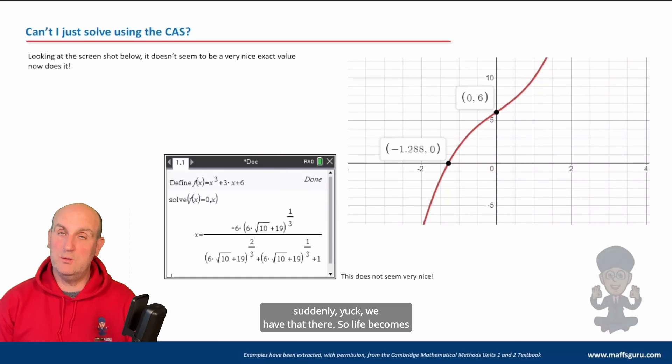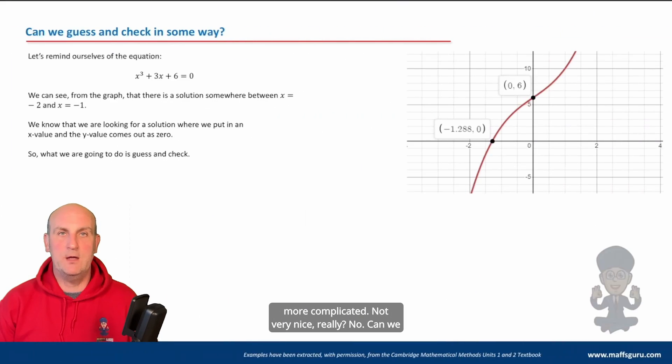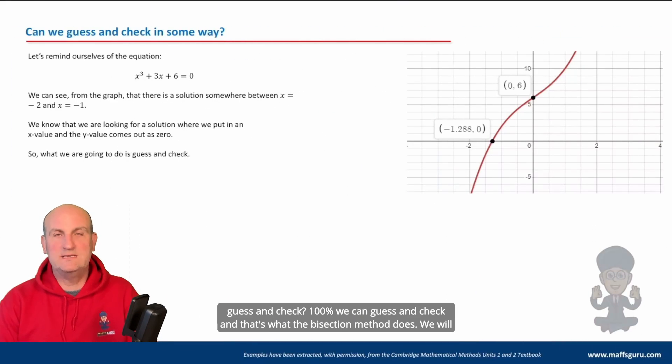So life becomes more complicated. Not very nice. Can we guess and check? 100% we can guess and check. And that's what the bisection method does.